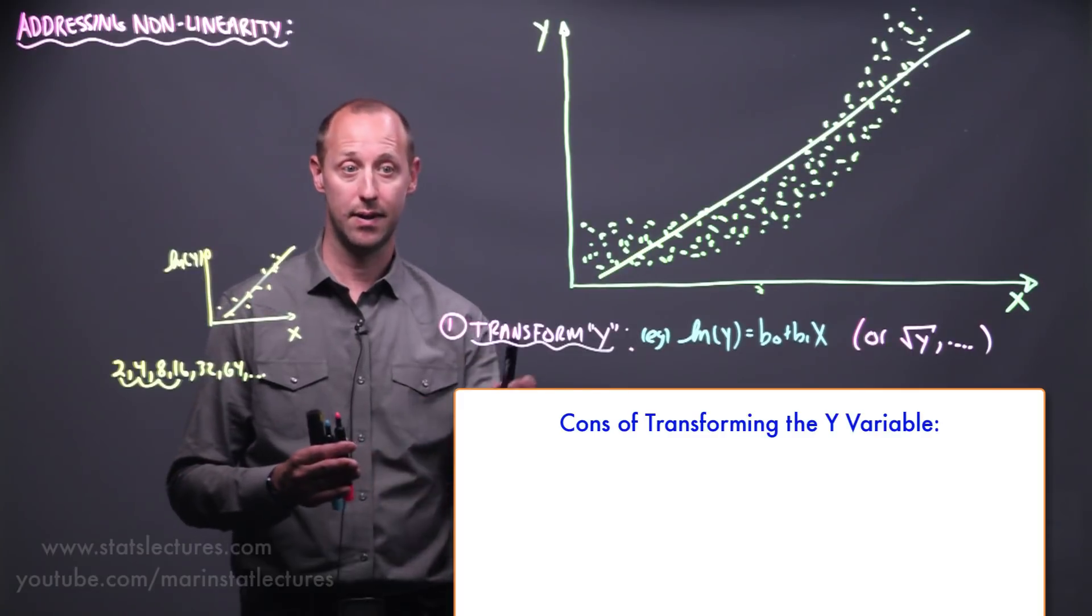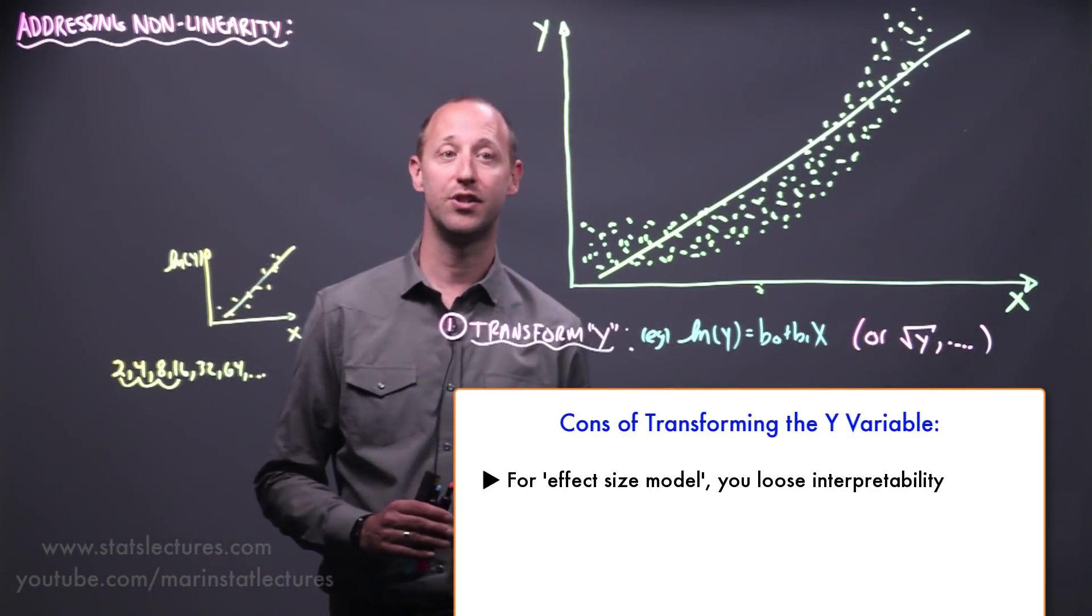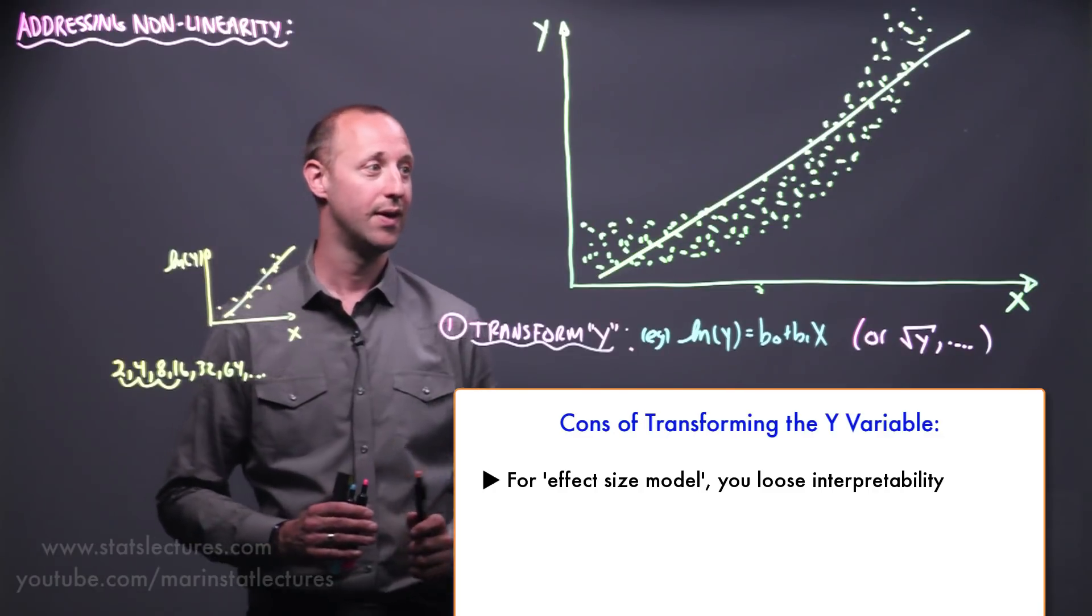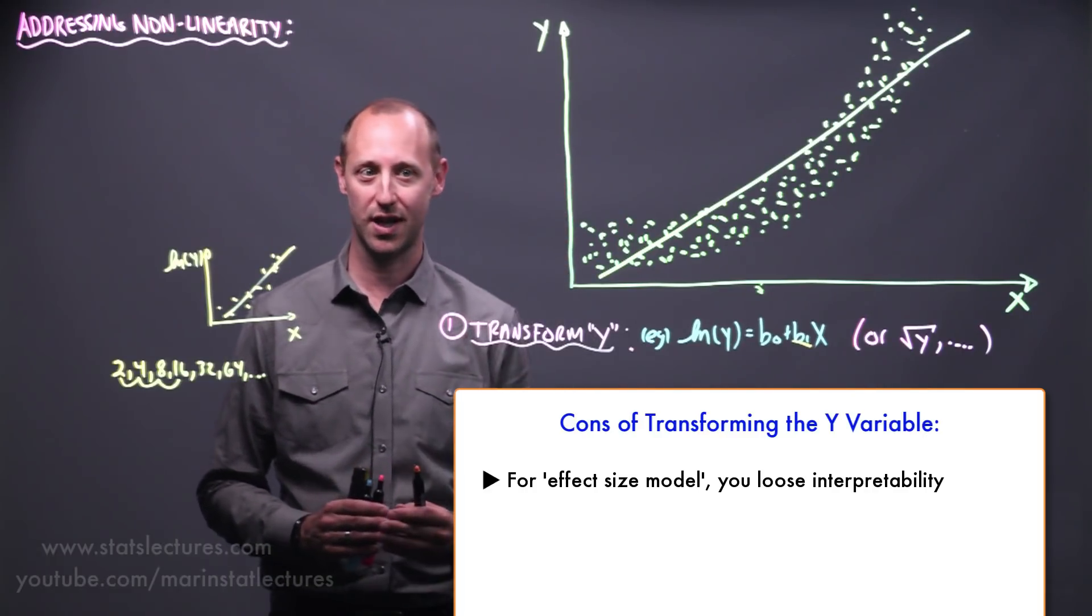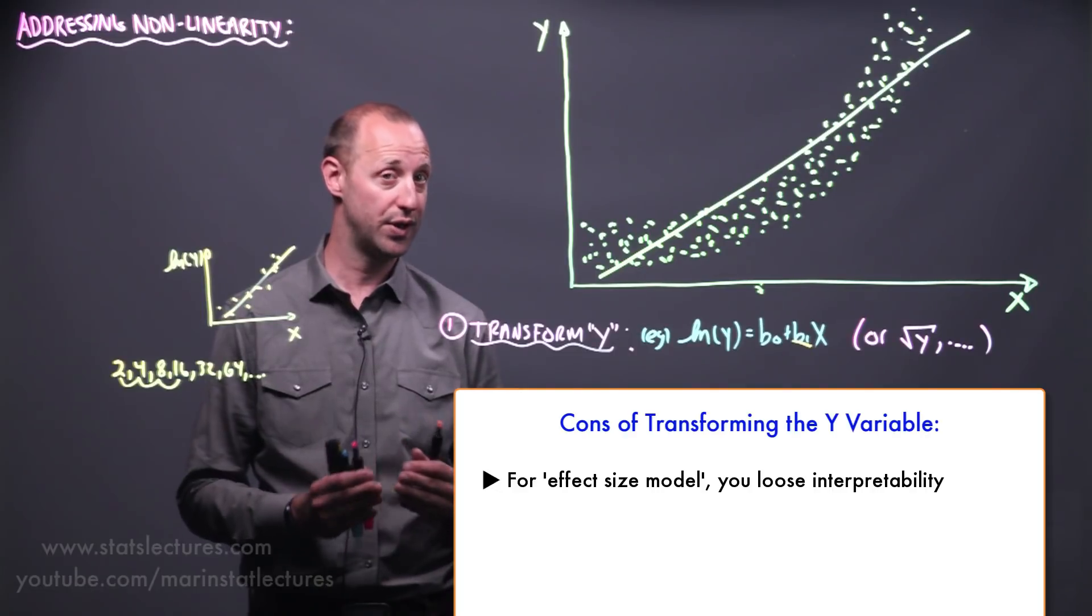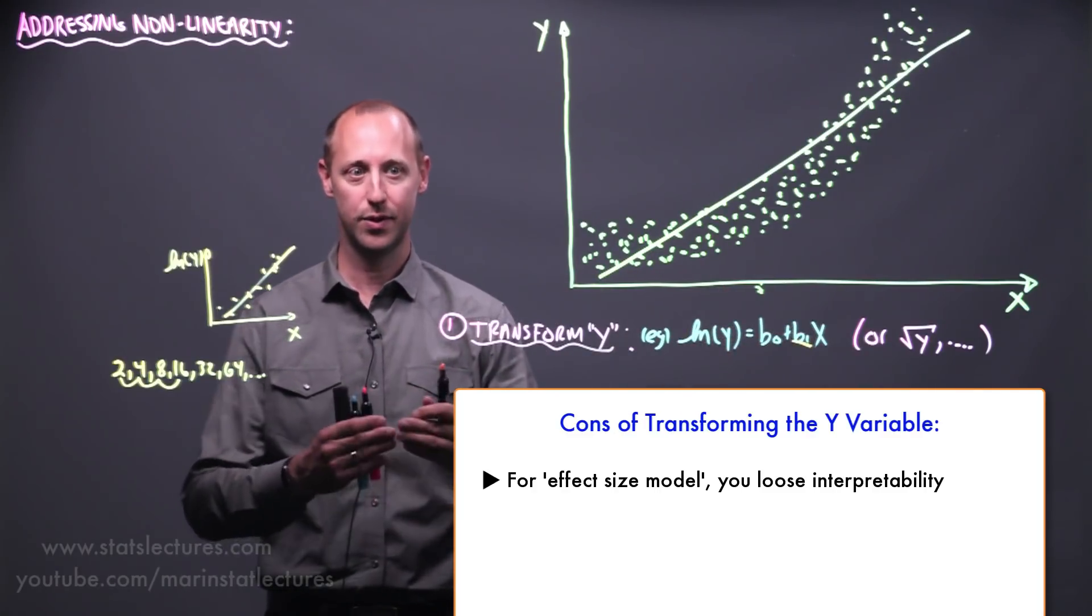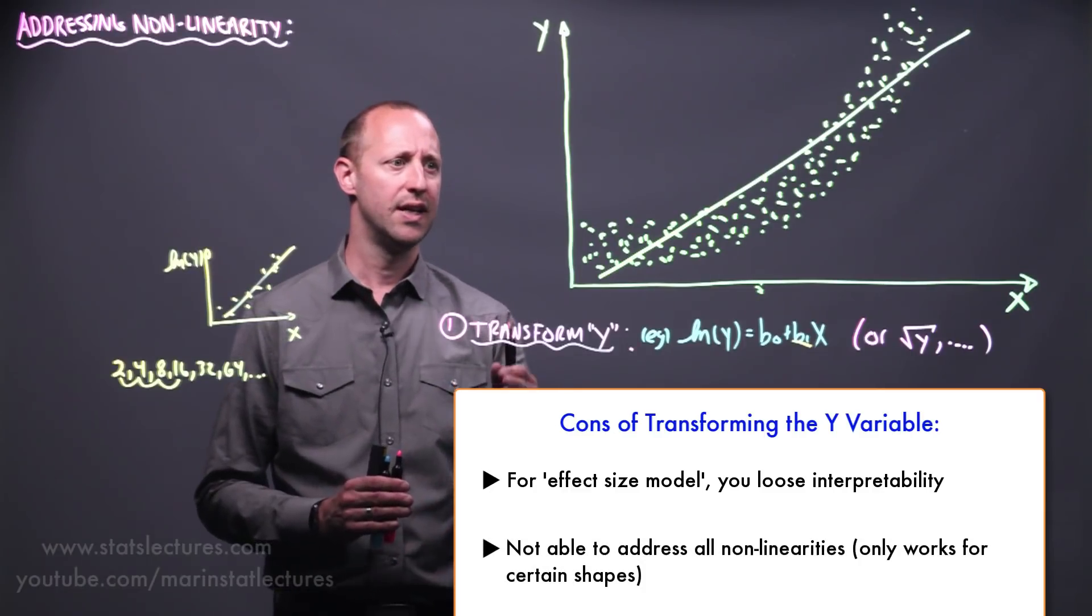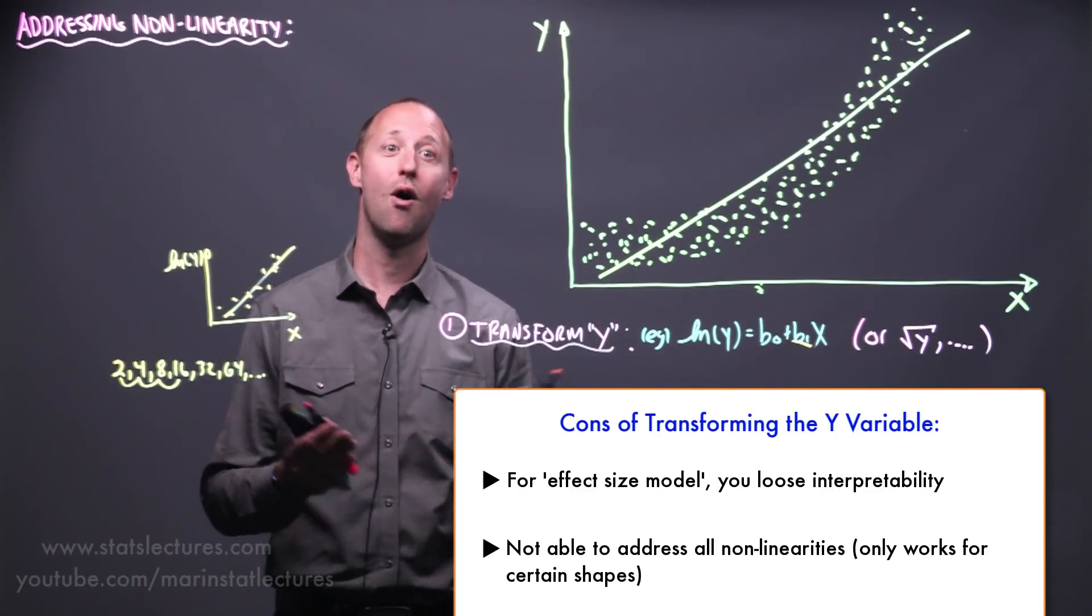Some of the negatives of transforming y is that if you're looking at an effect size model, say where you want to know what effect does your years of experience in a job have on your salary. If we take the log of y, in an effect size model, that slope is going to tell you what effect does every additional year of experience have on the log of your salary. That doesn't really have any meaningful interpretation because essentially you lose some interpretability. If you're in a predictive model setting where your goal is just to predict y, it's fine. You can take x, predict the log of y, back transform to get the predicted y value. So really you just kind of lose interpretability in effect size models. Another limitation is that these transformations can only address certain types of shapes of non-linearity. They're not able to address all non-linearities.